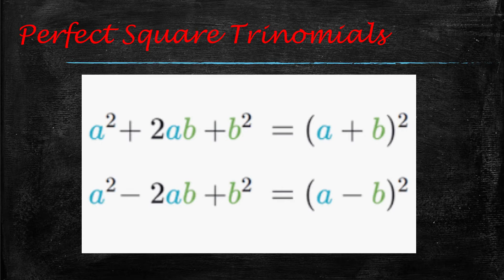Another factoring pattern is when you have what's called a perfect square trinomial. Now, when you have a perfect square trinomial, something that you're going to recognize is that the first term is going to be something squared,